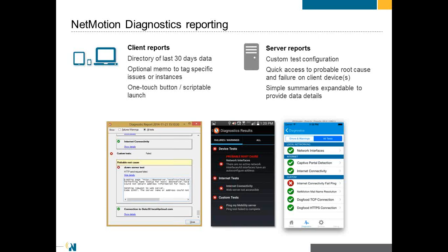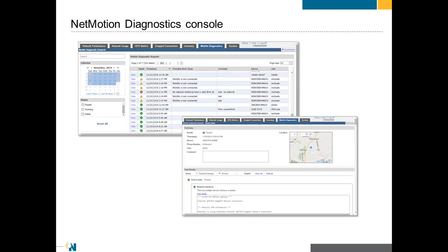A question that comes up: what if the problem is that they can't get connected to the Internet — how do you send that report? Obviously they can't send it with no connection. But what they can do — and this may require a bit of user training — is if it says Internet connectivity is the issue, go to a location where you can get connected. The report will automatically be sent once they can connect. They can also pull it off the device, and then from the console you can log in, see the actual report, see where the test failed, and compare that to your own troubleshooting.